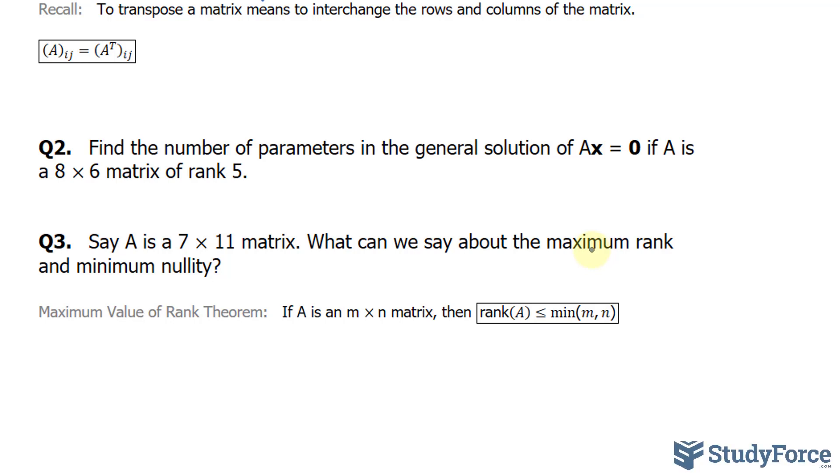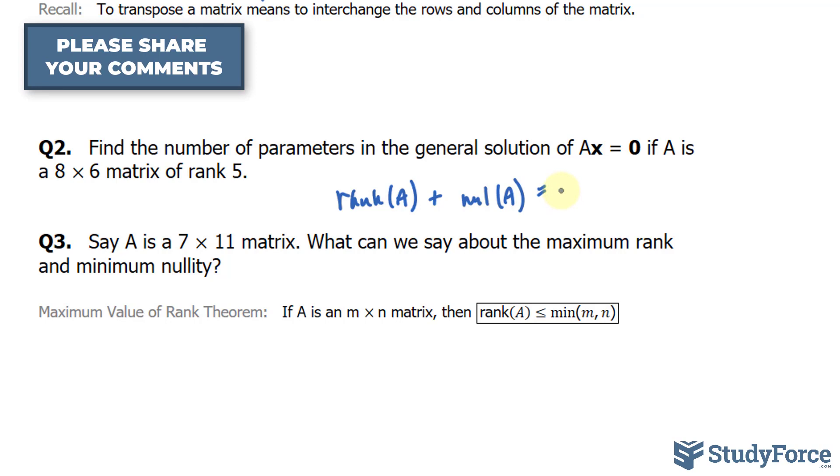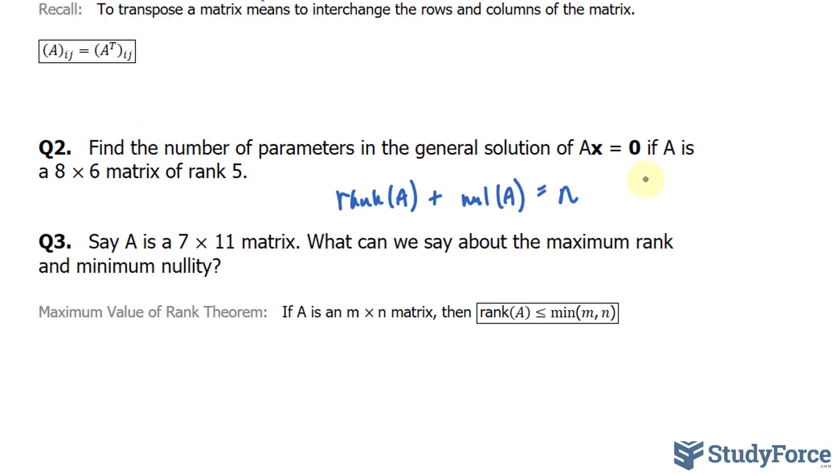We can use the same relationship as before, where the rank of A plus the nullity of A is equal to n, and we can rearrange. The rank of A plus the null of A is equal to the number of columns, which in our case is 6.